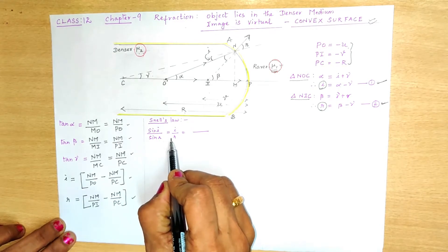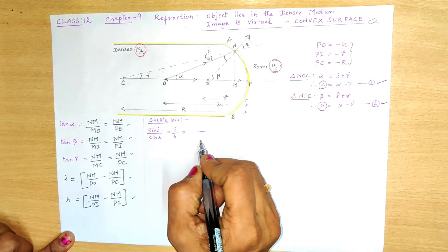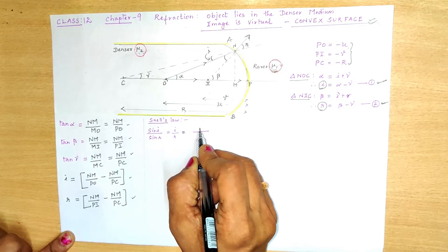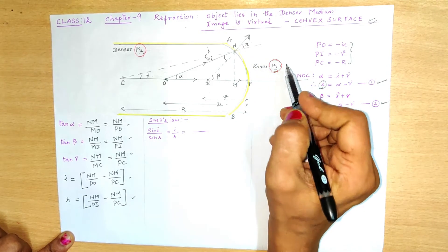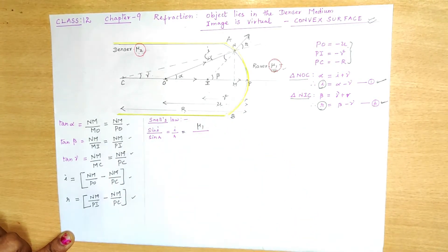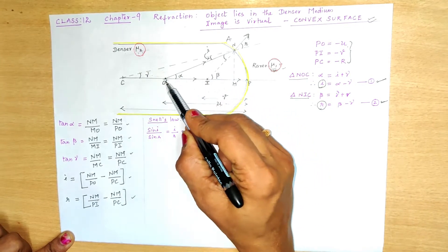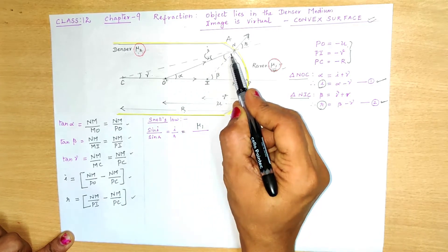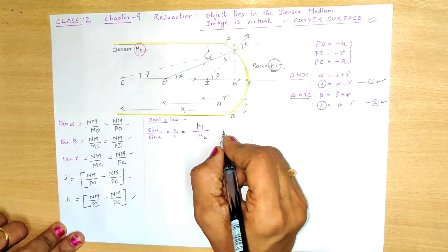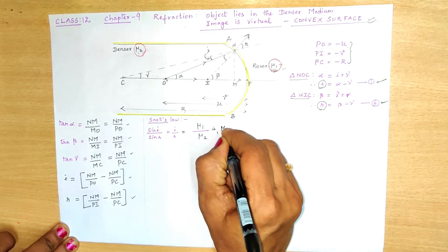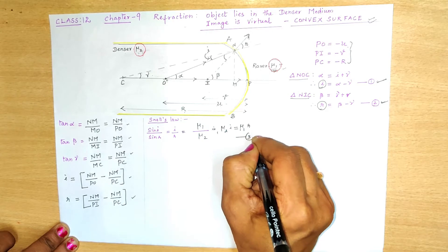Now look at Snell's law: sin I / sin R = μ₁/μ₂, which gives the ratio of refractive indices. The numerator has the refractive index of the medium where light gets refracted — the rarer medium, μ₁. The denominator has the refractive index of the medium where the incident light is coming from — the denser medium, μ₂. Cross-multiplying gives μ₂·I = μ₁·R. This is equation number 3.